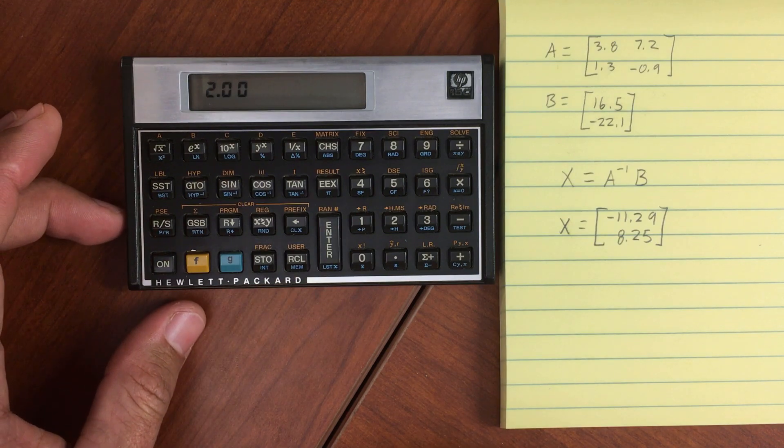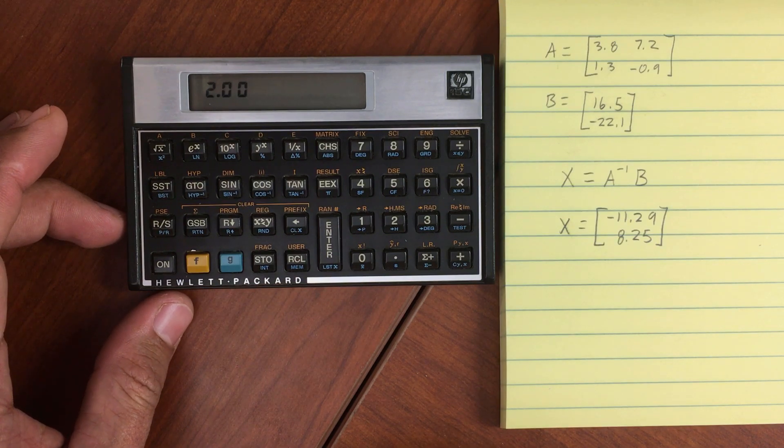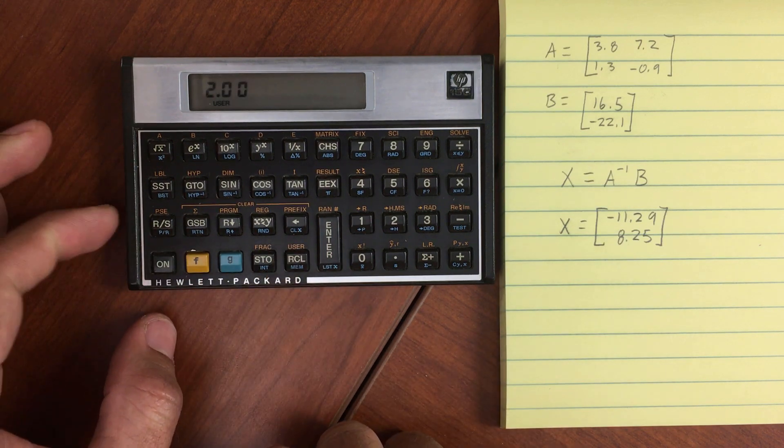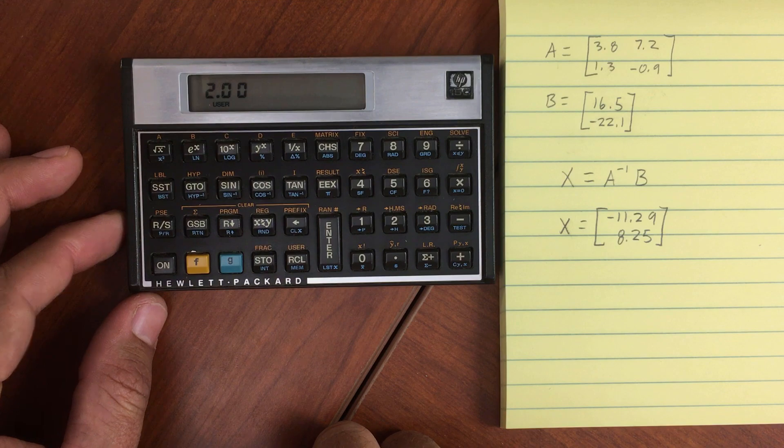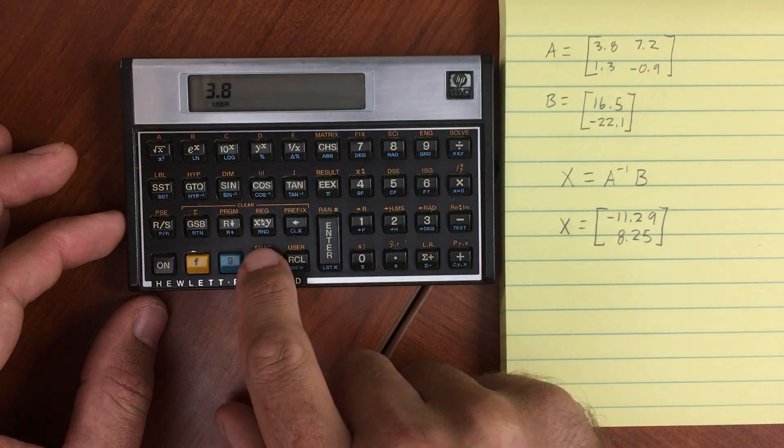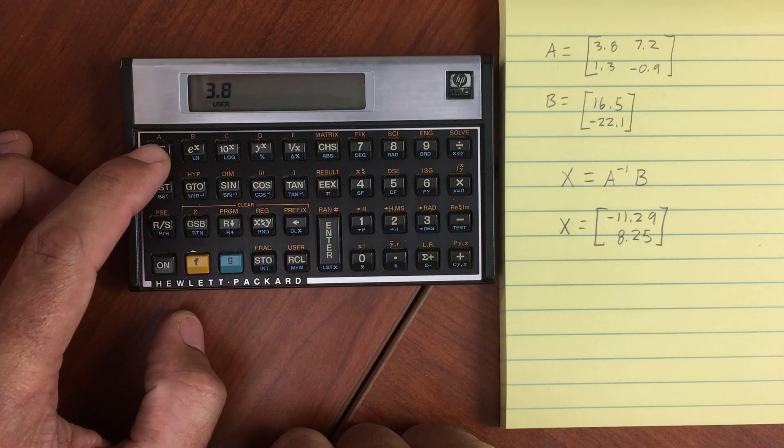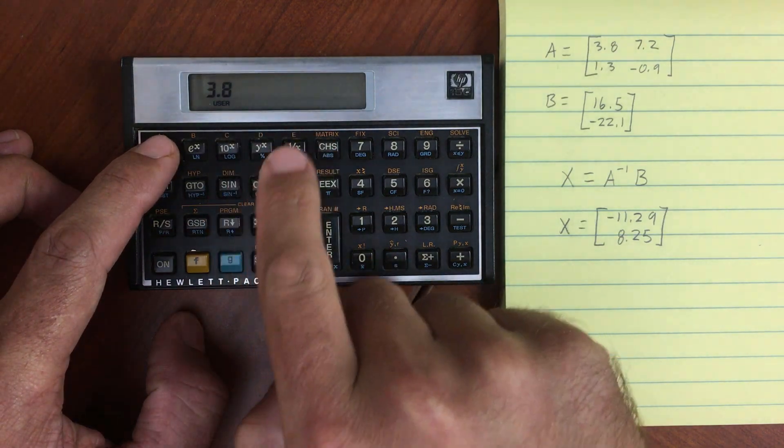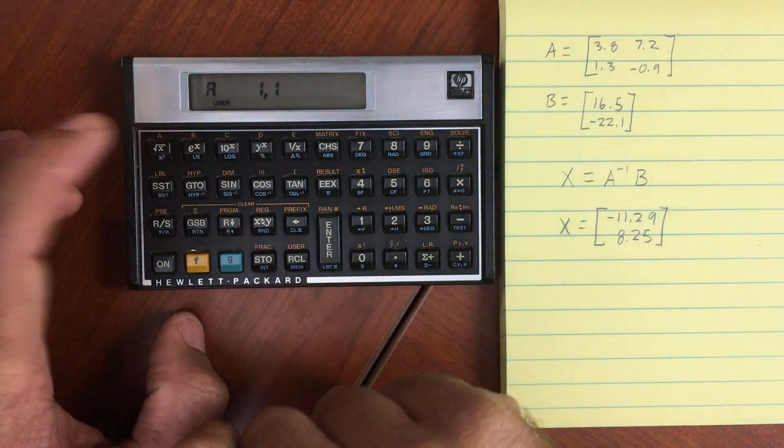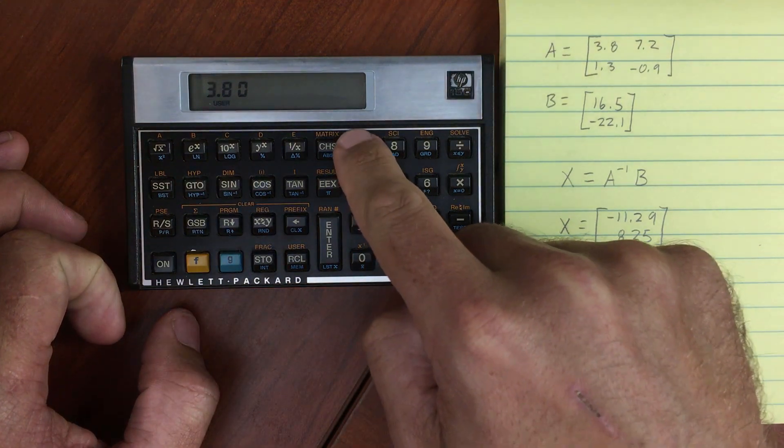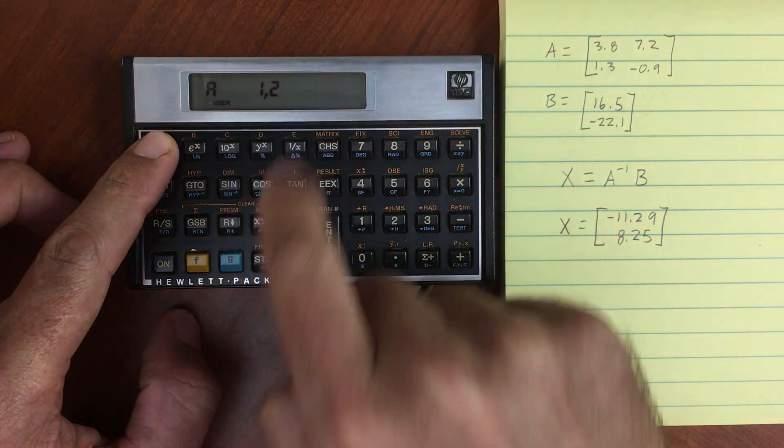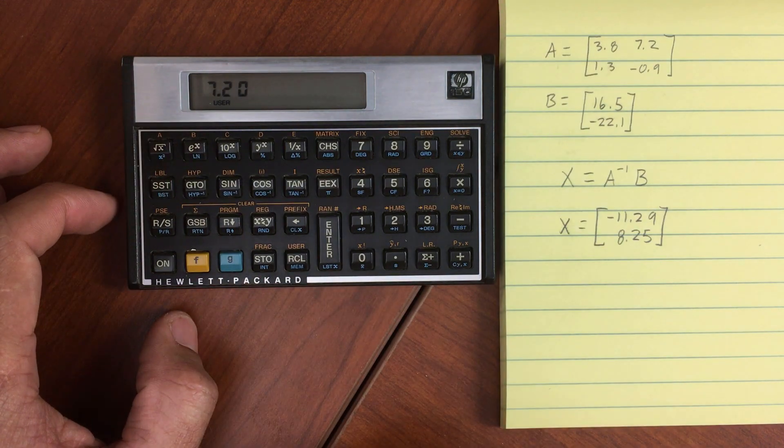Now we're going to start entering the elements. First we need to turn on user mode. So F, shift user, turns on user mode. And then we'll enter in the first element, 3.8, and then store that in matrix A. And if I hold down the key, you'll see that it will show which element we're storing it into. So we're storing it in A, 1,1. Release it. Now do 7.2. Store in A, 1,2. It's automatically incremented to the next one.